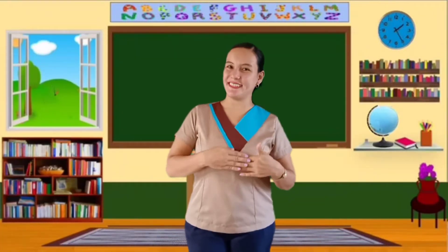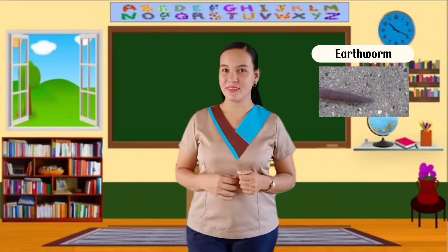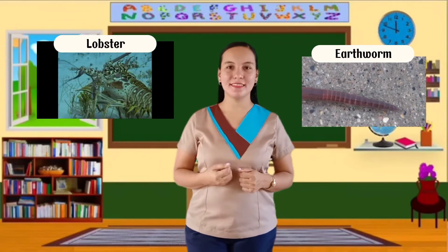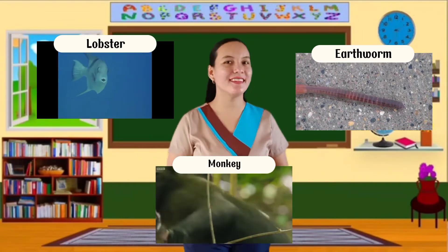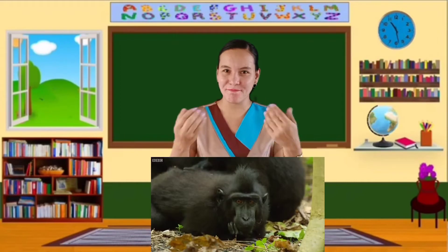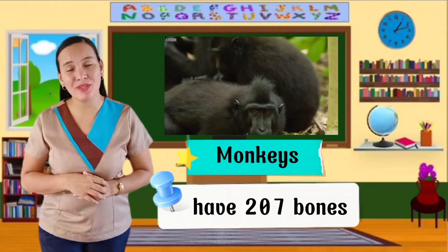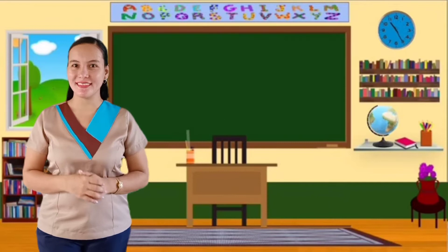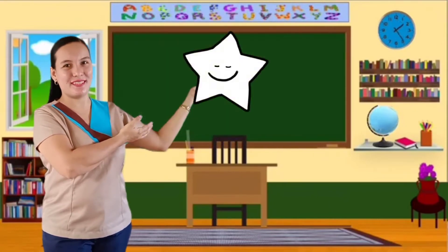And here is our final set: Earthworm, Lobster, Monkey. Very good! The answer is monkey. Monkeys have 207 bones. Here's your star for doing well in this activity.